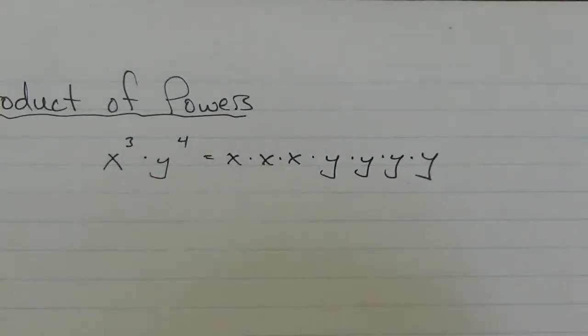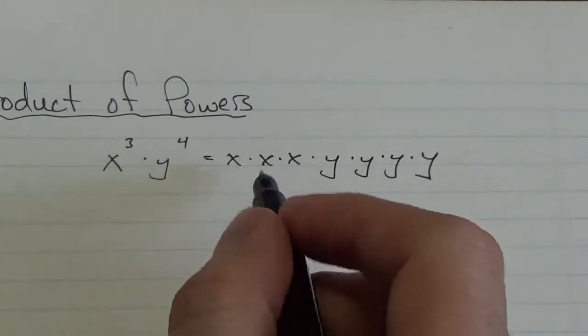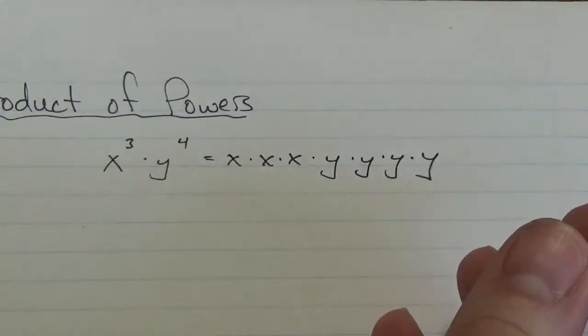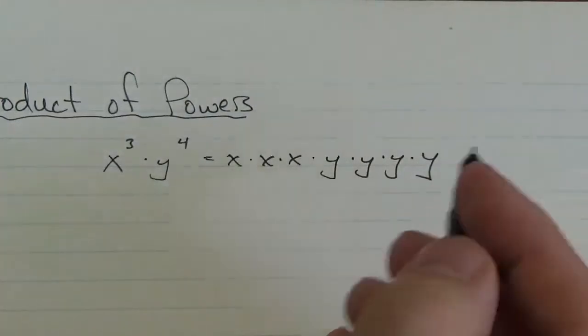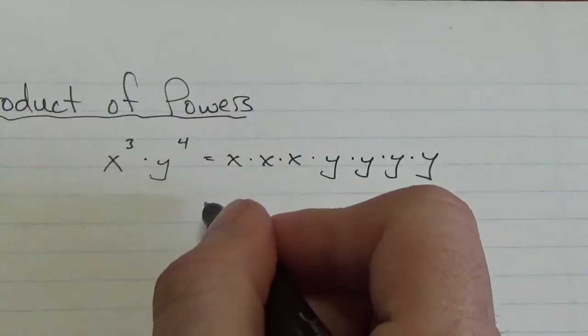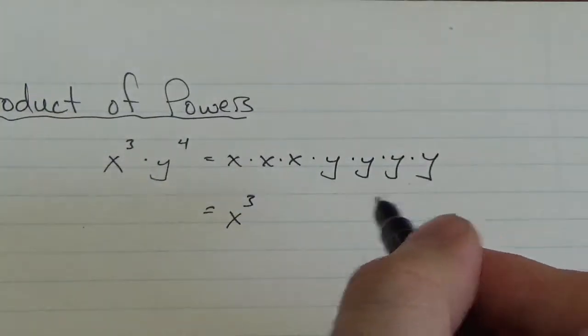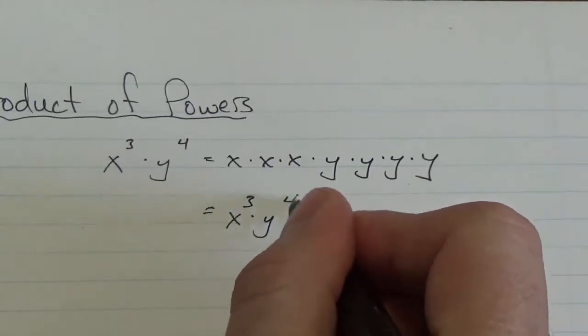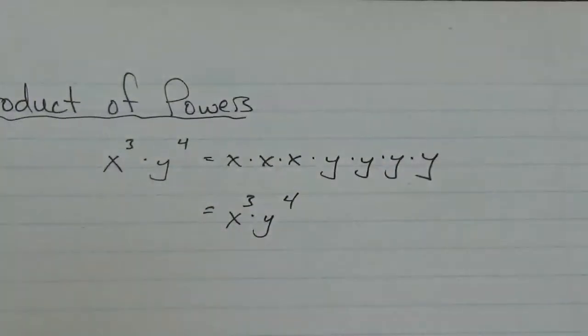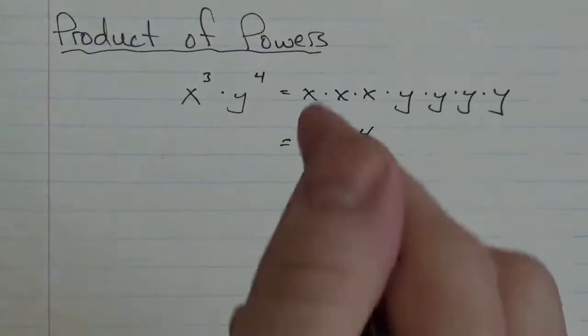Now, what can I do with that? Well, not much, because I can't really multiply x times y. I don't know what that is. So what's the best I can say? Well, the best I can say here is I've got three factors of x multiplied by four factors of y. I really can't do anything with that. But what if it looked like this?